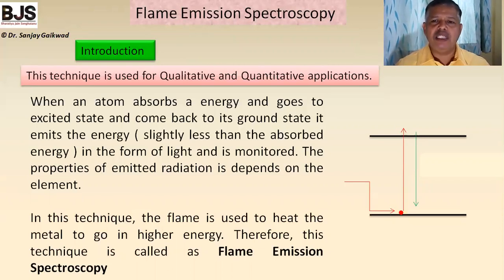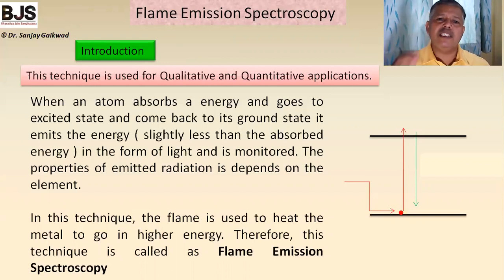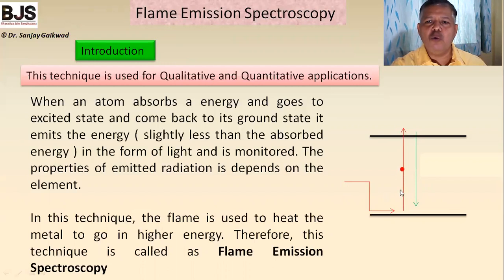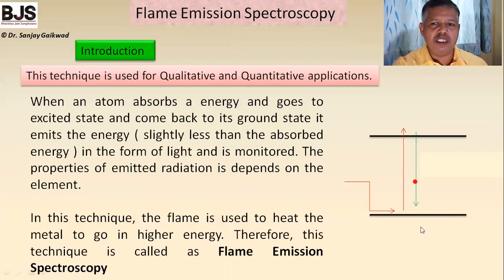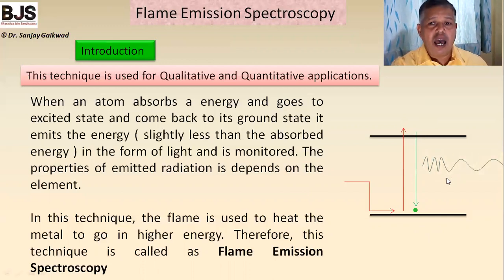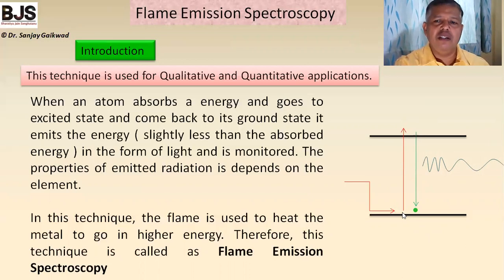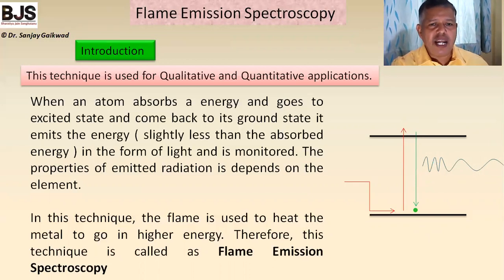In this technique, the atom or molecule present in the solution absorbs heat energy from the flame and goes to the excited state. After a certain time it comes back to the ground state, releasing the absorbed energy in the form of light radiation. The emitted radiation is at a slightly different wavelength than the absorbed radiation because some energy is consumed in the excitation process. This is the basic principle of the flame photometer.